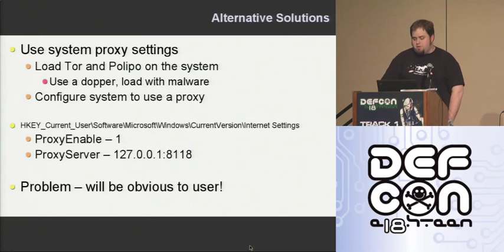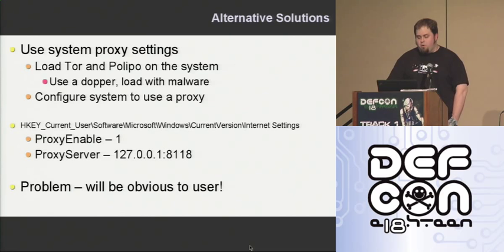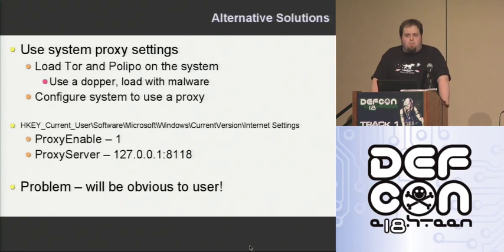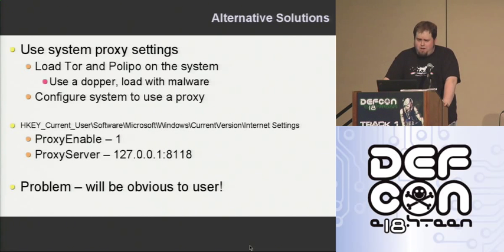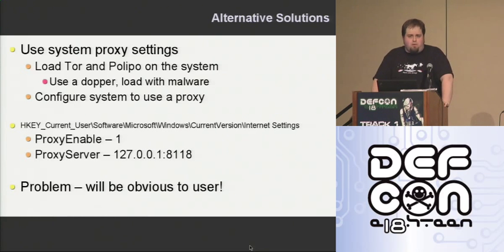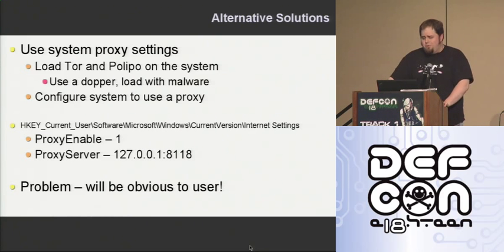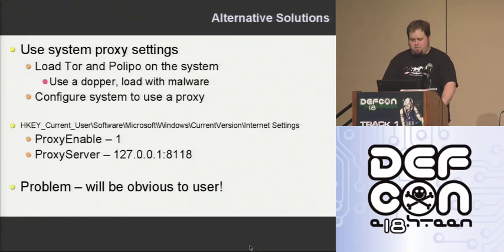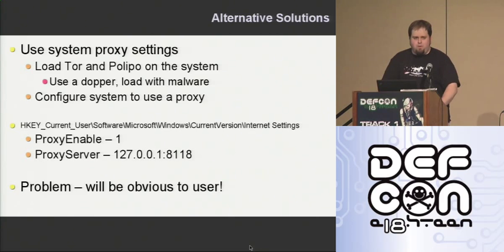We have the registry keys right there. You just set proxy enable to one, set your proxy server and the right port, and you're good to go. The problem with this is it's going to be very obvious to the user. The first time they go to Google, they're probably going to end up at the Czech Google or the German Google, and they're going to be like, I don't understand this language. That's not good — call up their ISP, something's wrong. That would be terrible.